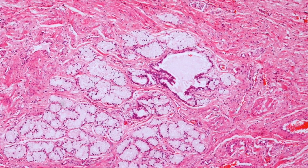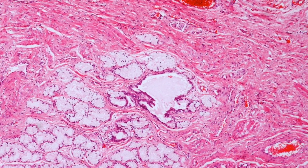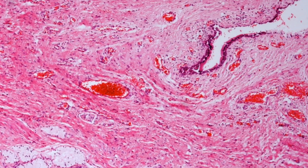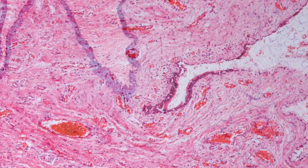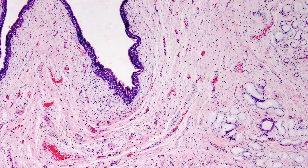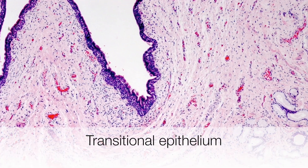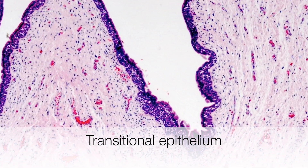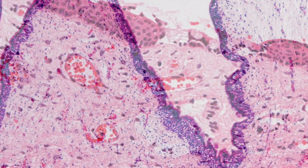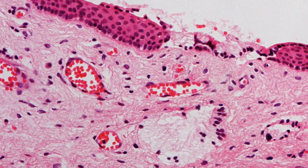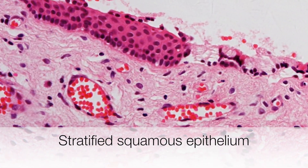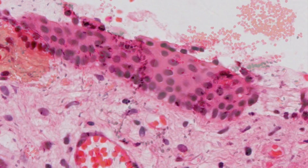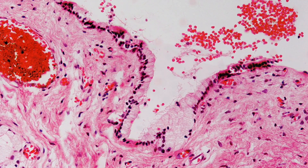Moving to the top right hand corner, the duct comes into view. This part of the Bartholin duct cyst is lined by transitional epithelium. Here we see stratified squamous epithelium, non-keratinizing of course, and finally there is the mucinous columnar epithelium.